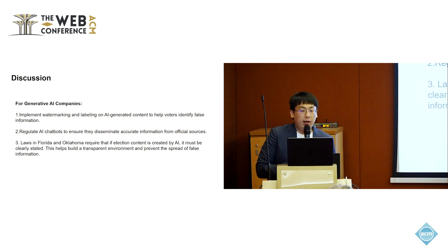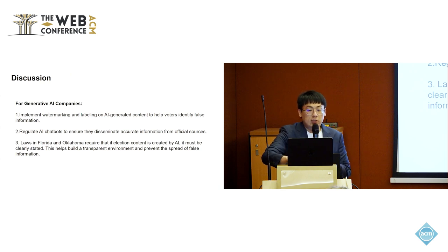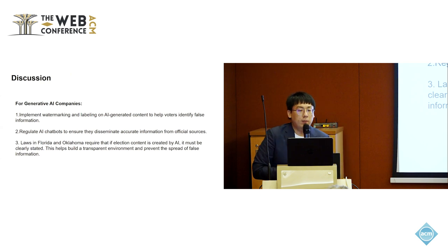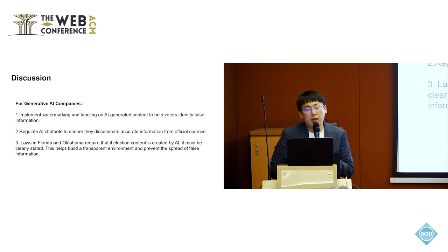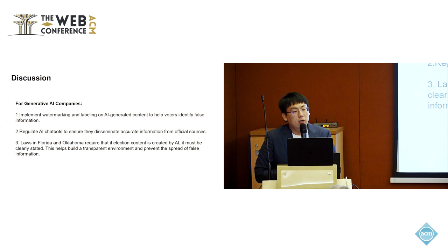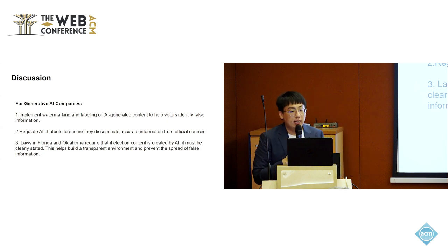Here are our discussion and suggestions. First, for generative AI companies, we have three suggestions. Suggestion one: implement watermarking and labeling on AI-generated content to help voters identify false information. Second: control AI chatbots. Third: follow the law — as we can see, laws in Florida and Oklahoma require that if election content is created by AI, it must be clearly labeled.